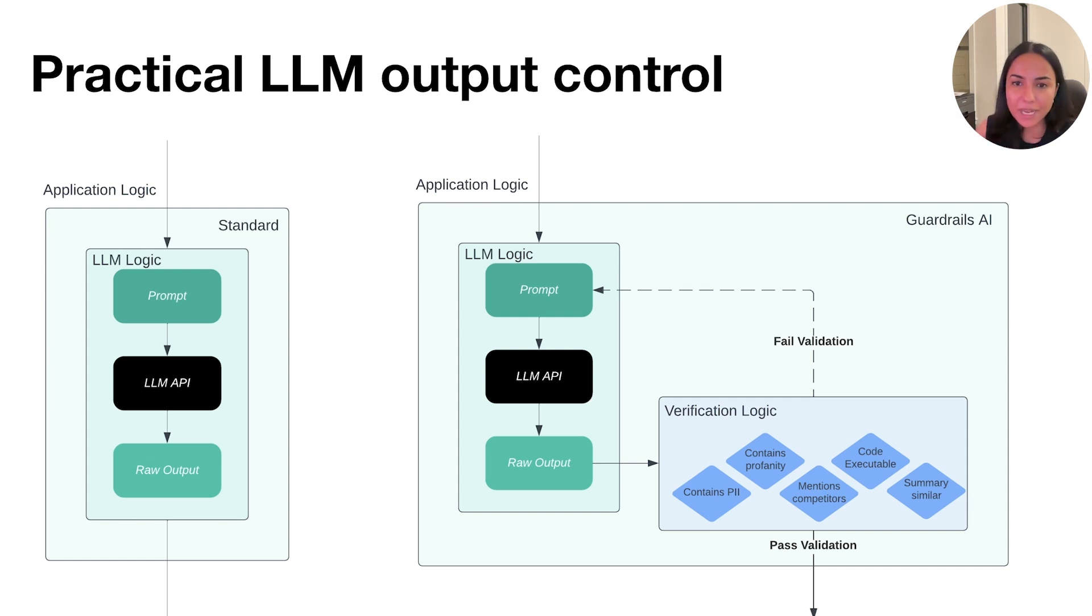As a combination of these programs, we either pass validation, in which case the output is correct and we forward the raw output back to the application logic, or validation fails, in which case we construct a new prompt and that prompt, the new prompt with relevant context about what specific validations failed is sent over to the LLM API and then corrected.